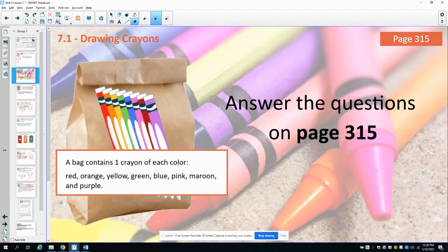The first event that we're going to look at is on page 315, and it involves a bag of crayons with eight crayons, one of each of these colors: red, orange, yellow, green, blue, pink, maroon, and purple. Go ahead and answer the two questions on 315 and then come back to the video for us to discuss.